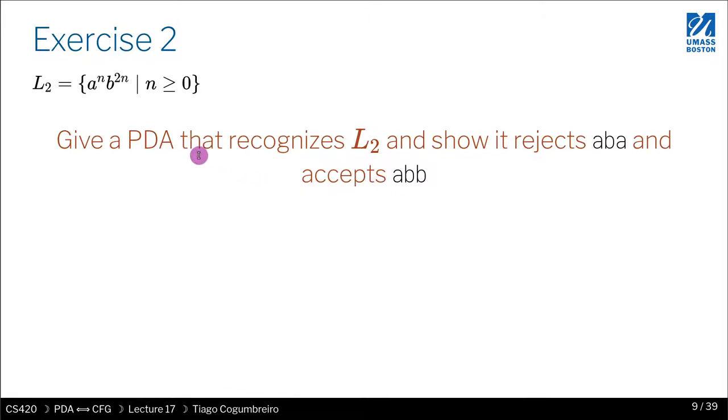So let us give a PDA that is able to recognize, and then let's show that it rejects aba but accepts abb—so one A and two B's. Try to do that and please pause the video. Once you're done, come back here and I'll show you the PDA I designed.